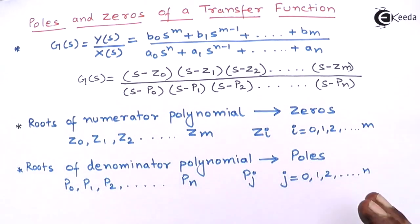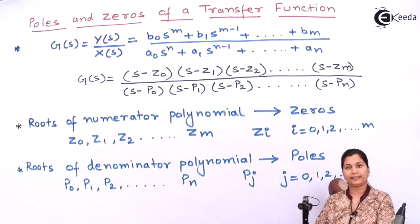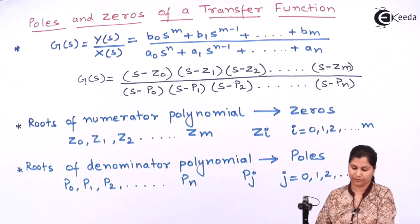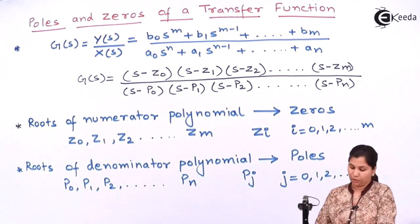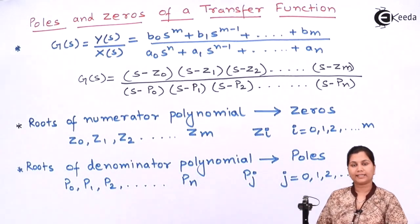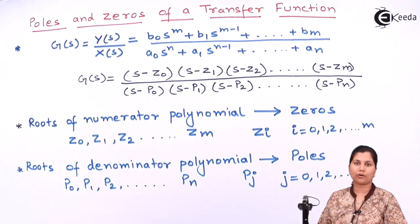So there are M zeros and N poles of the transfer function. These are the poles and zeros. Now let us study what is the characteristic equation of a transfer function.